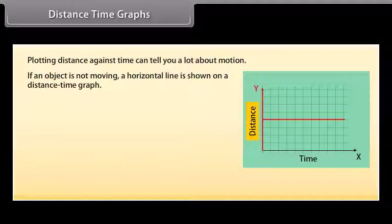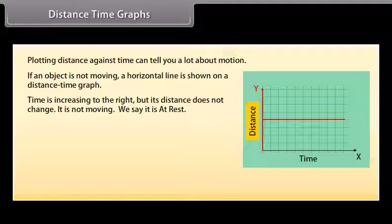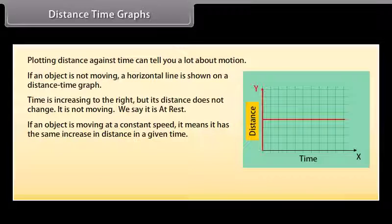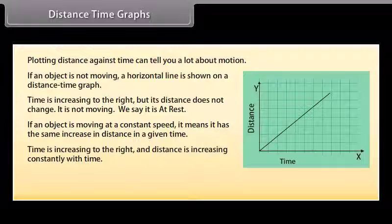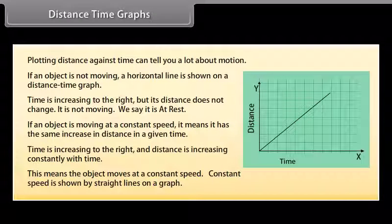If an object is not moving, a horizontal line is shown on a distance-time graph. The time is increasing to the right but its distance does not change — it is at rest. If an object is moving at a constant speed, it has the same increase in distance in a given time. On the graph, distance increases constantly with time — constant speed is shown by straight lines on a graph.